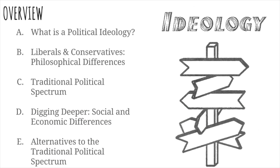Tonight's homework is going to focus on the idea of political ideologies. We'll start by defining what a political ideology is and talk a little bit about the philosophical differences between liberals and conservatives — terms that you hear quite often and that we normally associate with Democrats and Republicans. We'll also talk about how to plot those beliefs on a traditional political spectrum, go a little bit deeper into the social and economic differences, and then plot it on a more complex political spectrum to see the nuances of these different ideologies.